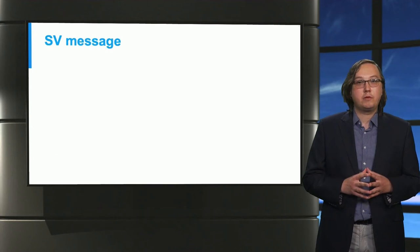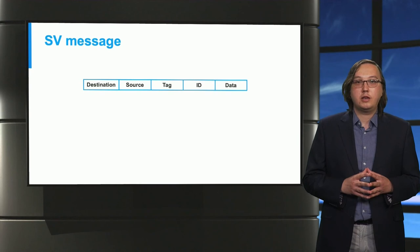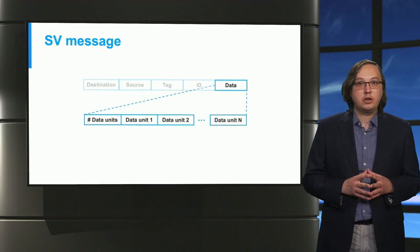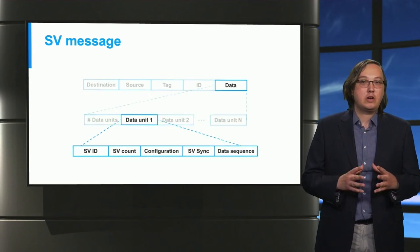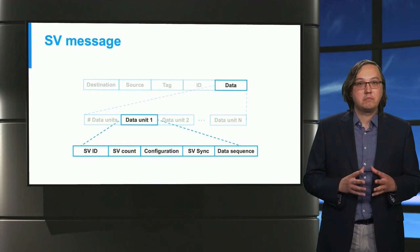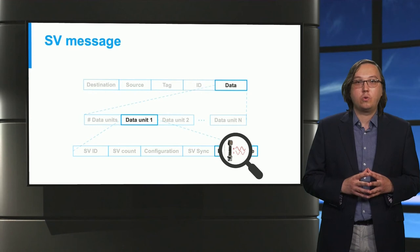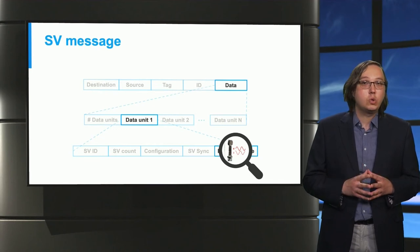Now let's see how a typical sample value message looks like. At the top level it has a destination and source address, a tag and ID and then a placeholder for the data. Inside this placeholder there is space for multiple data units. The structure of a data unit looks like this. But it is essential to remember that the measurements are stored at the very end in the data sequence. Please note that there is no security mechanism to safeguard this data.